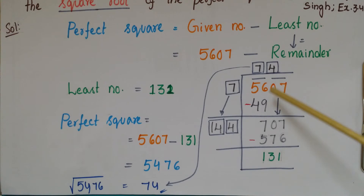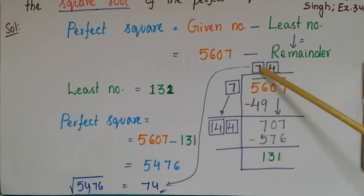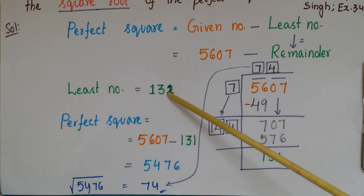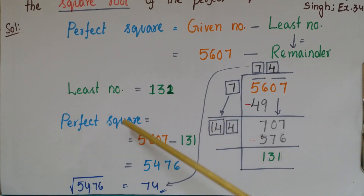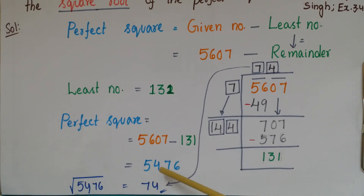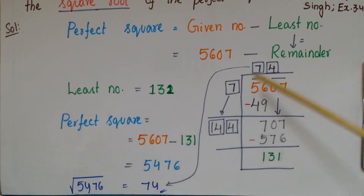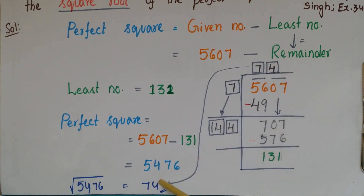Once we subtract the remainder 131 from the given number, we get the perfect square. So the least number equals 131. Perfect square equals 5607 minus 131, which is 5476. So 5476 is the perfect square, and the square root of 5476 is the quotient, which is 74.